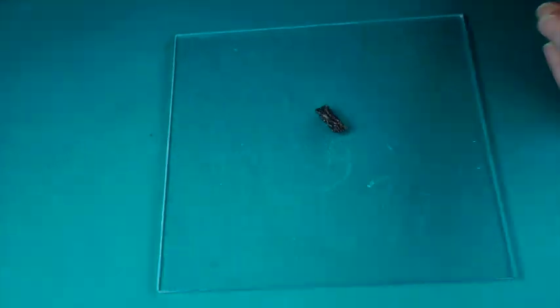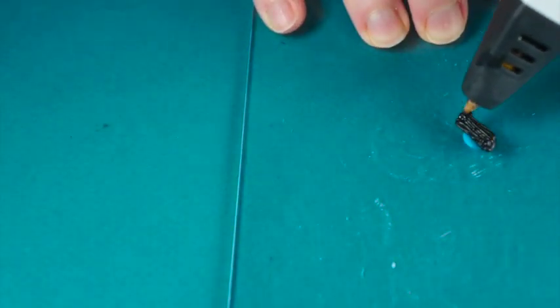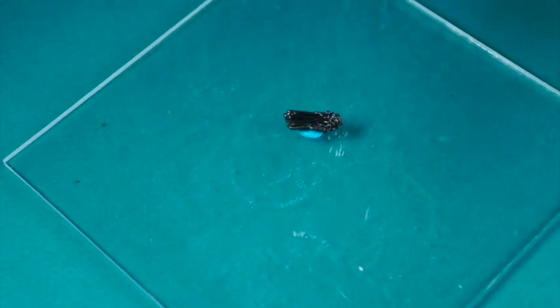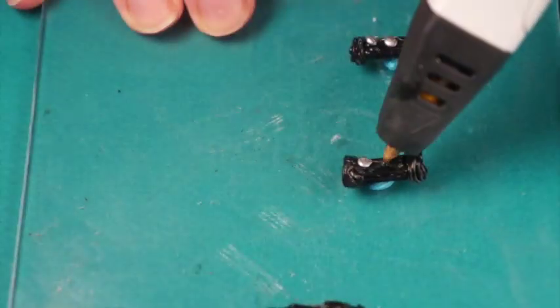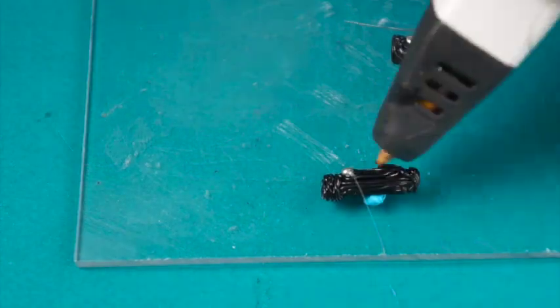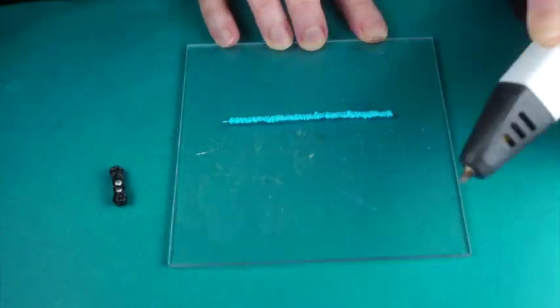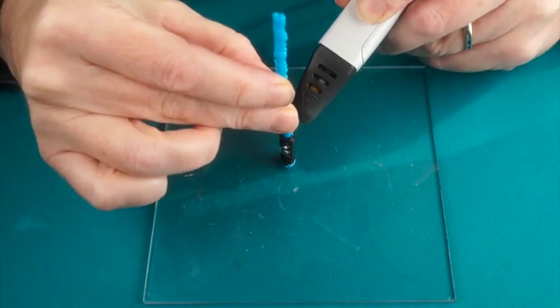Trace over the lightsaber handle, go back and forth to add depth. Coil around the end to make it easier to attach the lightsaber. Add some shiny buttons. Use sticky tack to stand the handle upright while attaching the lightsaber.